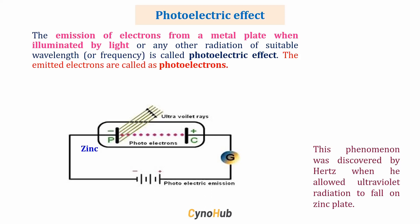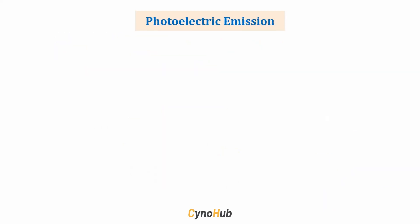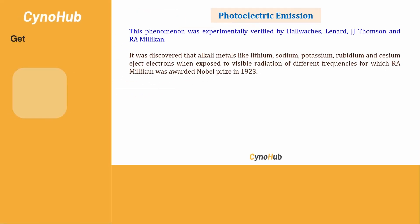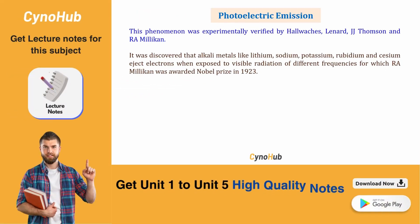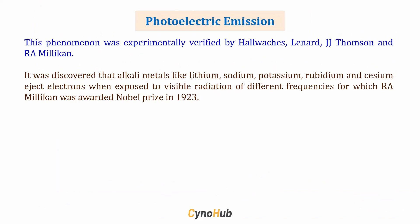This phenomenon was first discovered by Heinrich Hertz when he allowed ultraviolet radiation to fall on a zinc metal plate. The phenomenon of photoelectric emission was experimentally verified by many other scientists like Hallwachs, Lenard, J.J. Thomson, and R.A. Millikan. It was discovered that all alkali metals like lithium, sodium, potassium, rubidium, and cesium eject electrons when exposed to visible radiation of different frequencies. R.A. Millikan was awarded the Nobel Prize in 1923 for this work.